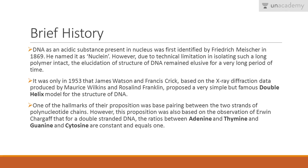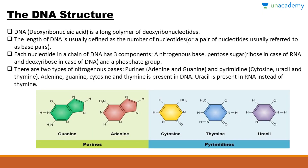Before moving on, I would like to narrate a brief history of the founding of DNA. DNA as an acidic substance present in the nucleus was first identified by Frederick Miescher in 1869; he named it Nuclein. Due to technical limitations in isolating such a long polymer intact, elucidation of DNA structure remained elusive for a very long period. It was only in 1953 that James Watson and Francis Crick, based on X-ray diffraction data produced by Maurice Wilkins and Rosalind Franklin, proposed the famous double helix model. One hallmark of their proposition was base pairing between the two strands of polynucleotide chains, also based on Erwin Chargaff's observation that for double-stranded DNA the ratios of adenine to thymine and guanine to cytosine are constant and equal to one.